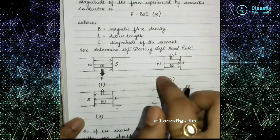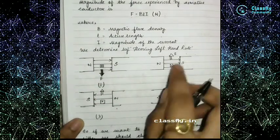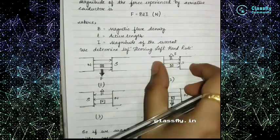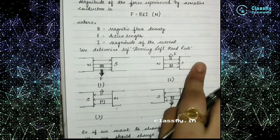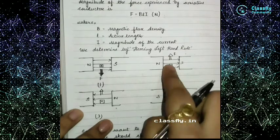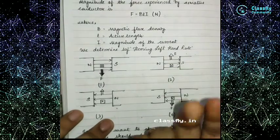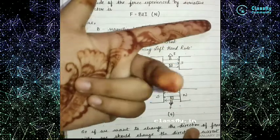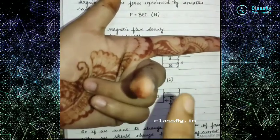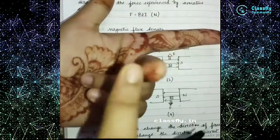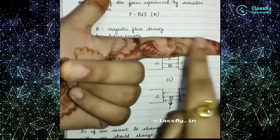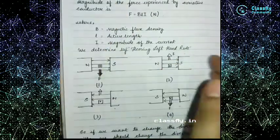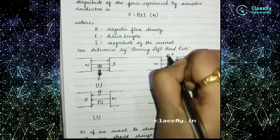In another case, the magnetic field flows from north to south, but the current is flowing outward (out of the paper). Applying Fleming's left hand rule, the direction of force is determined to be in the opposite direction from the previous case.